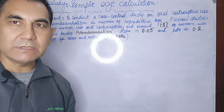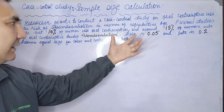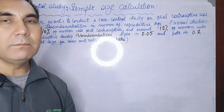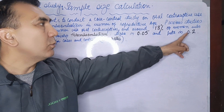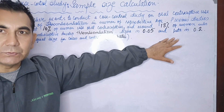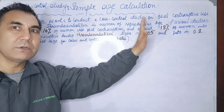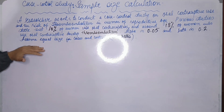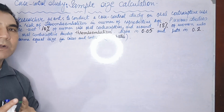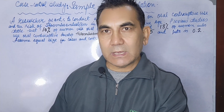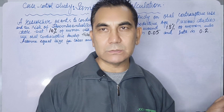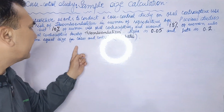The alpha taken by the researcher is 0.05, which is 5%. The beta for this test is 0.2, meaning 20%, so the power of the test is 80%. The ratio of cases to controls is assumed to be one-to-one.